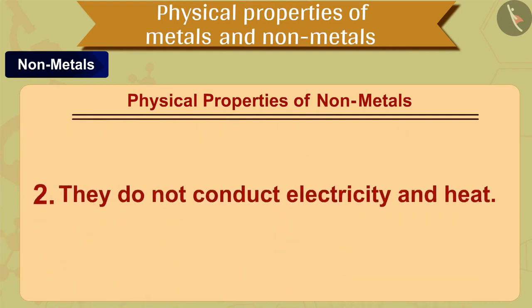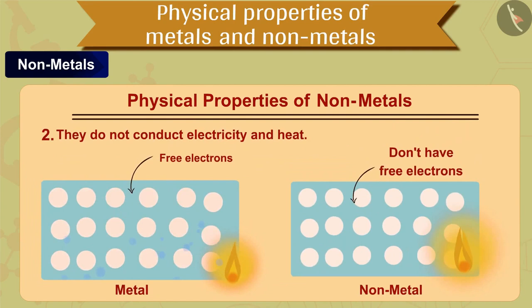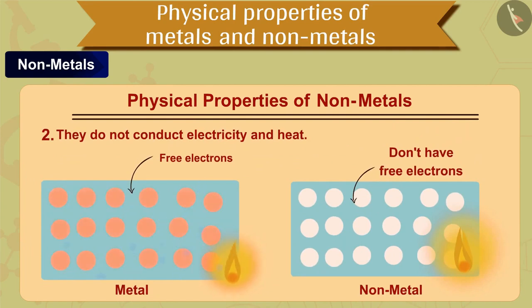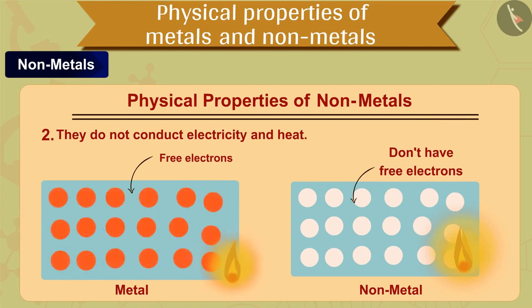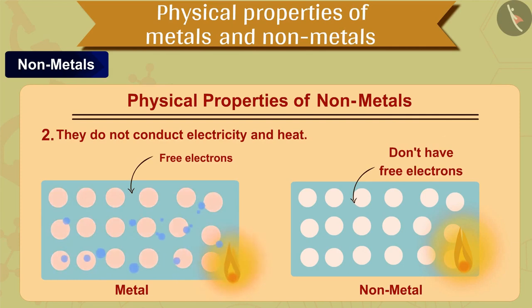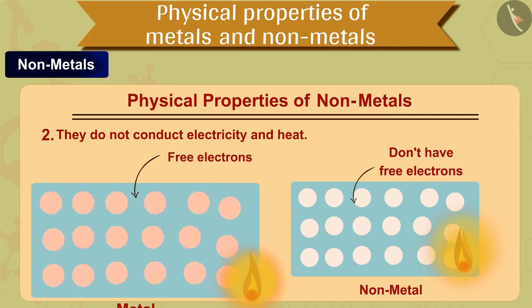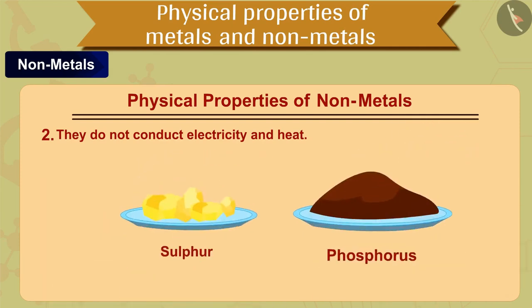The second property of non-metals is that they do not conduct electricity and heat. Unlike metals, these non-metals do not conduct heat or electricity. Why? Because they do not have free electrons. For example, sulfur and phosphorus.